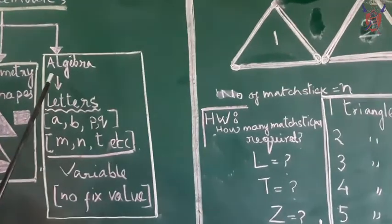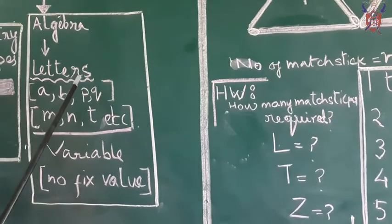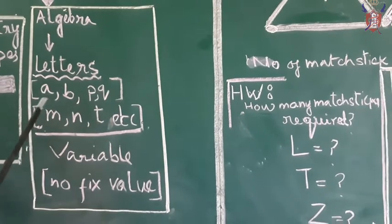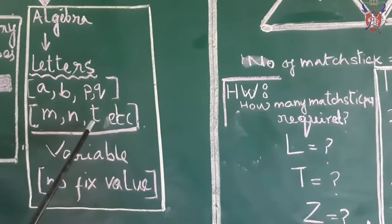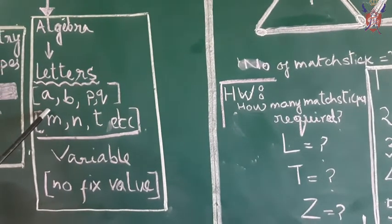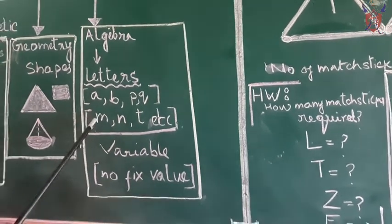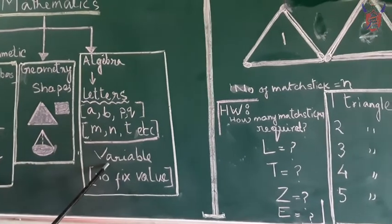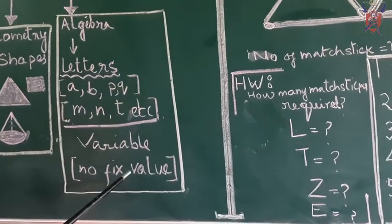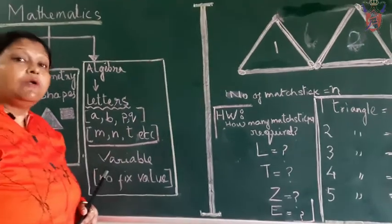Now I will come to algebra. Algebra is dealing with letters. The letters are denoted by English alphabets: A, B, P, Q. I have written some examples here, N and T, etc. But here you have seen there are no numbers. That means they are not fixed, they are variables. We are always dealing in algebra with variables because they don't have any fixed value. Next part I will show you how the variables are working.